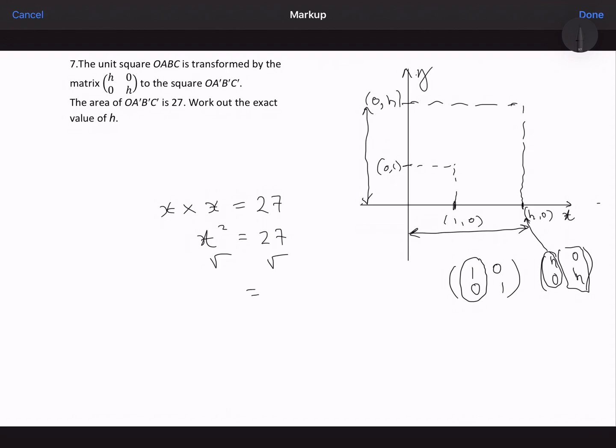So if I square root that, I'm going to get X is equal to the square root of 27, which can be simplified into the root 3 times 9. I can take the 9 outside the root, so that's going to become 3 root 3, which also happens to be my answer.